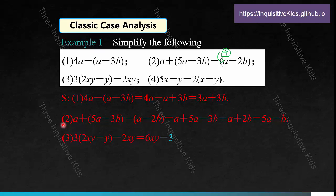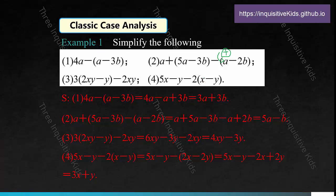For the third problem, you need to use the distributive property to factor the 3 into each of the two terms, giving 6xy minus 3y minus 2xy. Simplifying by combining like terms gives 4xy minus 3y. For problem 4, use the distributive property to factor the negative 2 in — view the entire number in front of the parenthesis, including the sign, as a whole. Factor the negative 2 into (x plus y), then combine like terms to get 3x plus y.